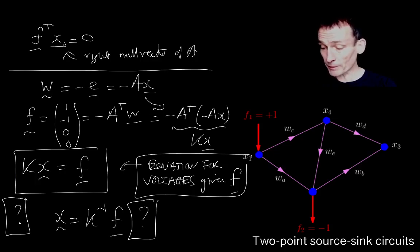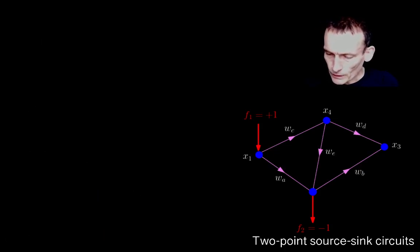I would like it to be. That would make life very simple. Unfortunately, it's not. The reason being, unfortunately, that K inverse doesn't exist. This is a, K is a singular matrix.